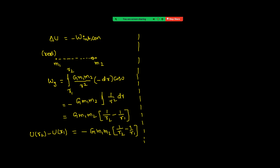While solving problems, we focus on the change in potential energy, which doesn't change when we change the reference point. So I am taking here: let potential energy be zero when R is infinity. That means when separation between the point masses is very large, there is no potential energy for the system. Let us take R1 as infinity and R2 equal to R, then see what we get.